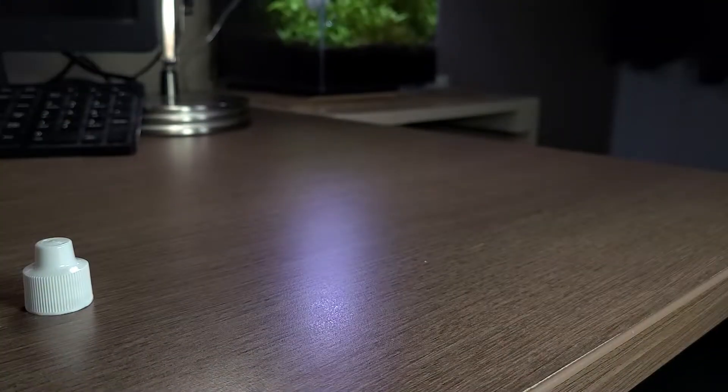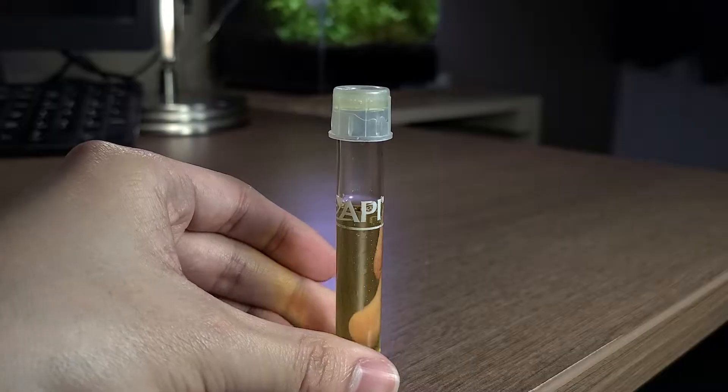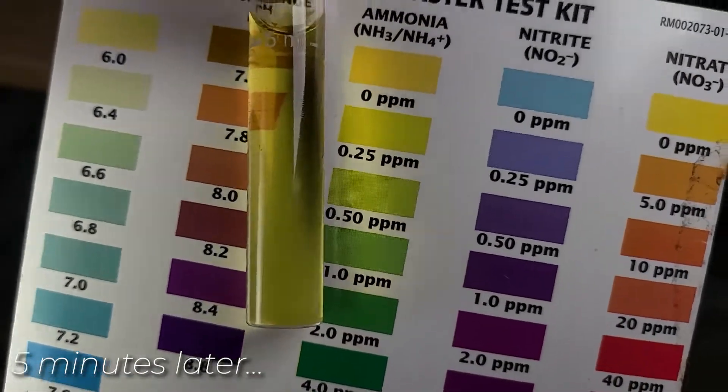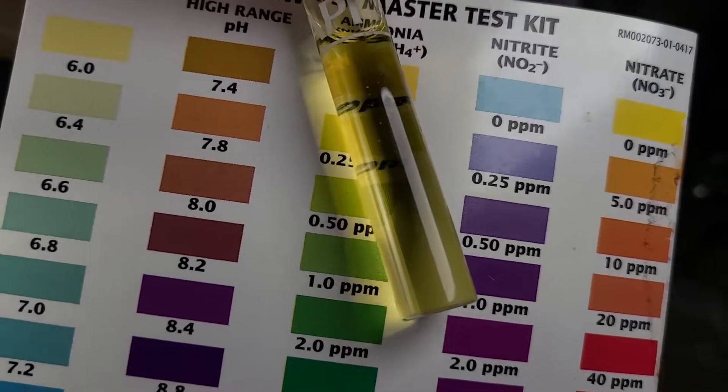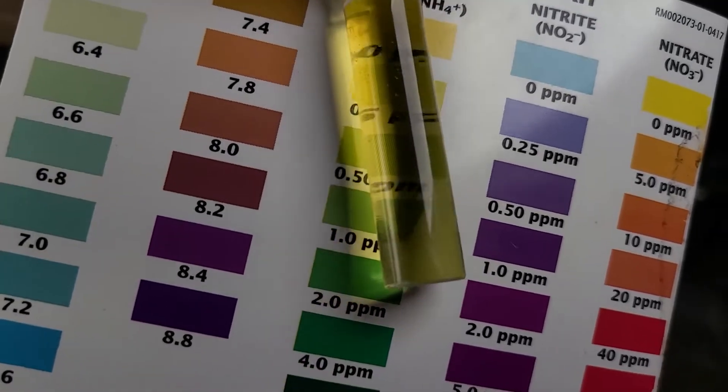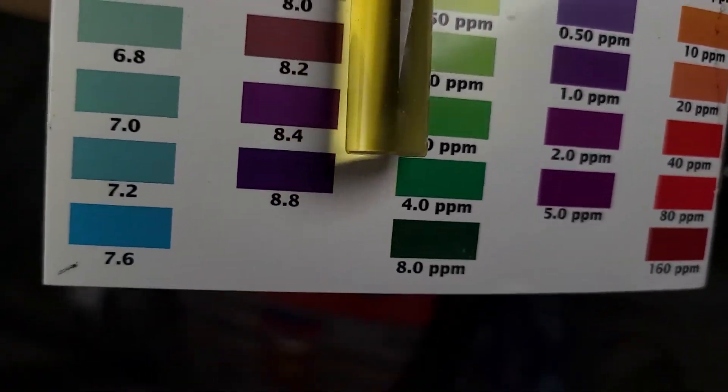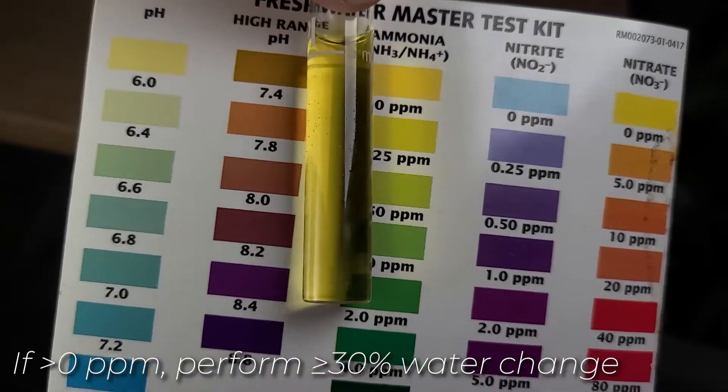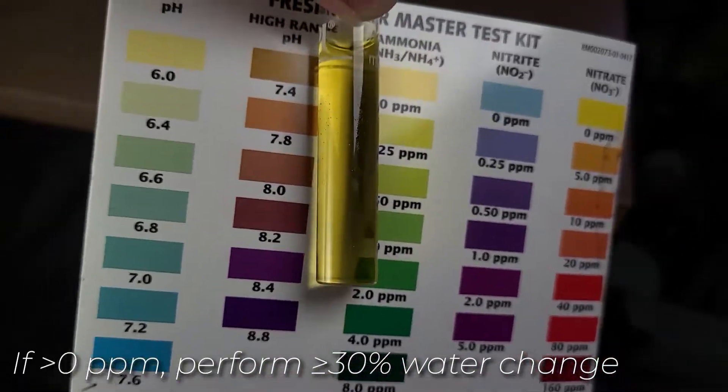Now, we have to wait for about five minutes for the color to develop. This water has zero ppm of ammonia. This is good as you want zero ppm with an established tank. If it's any higher, do a 30% or more water change to remove some of it.